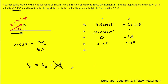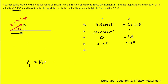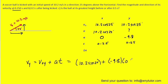For the y direction, we use the same equation: final velocity in y equals initial velocity in y plus acceleration times time. We fill in the initial velocity of 10.2 sin 25, then add the acceleration of negative 9.8 multiplied by the time of 0.25 seconds. When we calculate that, we get 1.86 meters per second, which is the final velocity in the y direction.